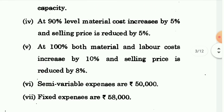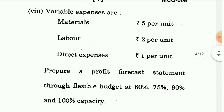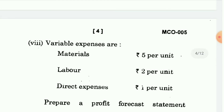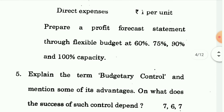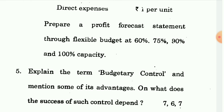At 90% level, material cost increases by 5% and selling price is reduced by 5%. At 100%, both material and labor cost increase by 10% and selling price is reduced by 8%. Semi variable expenses are 50,000 and fixed expenses are 58,000. हमने flexible budget statement बनानी है — 60%, 75%, 90%, और 100% capacity पर।